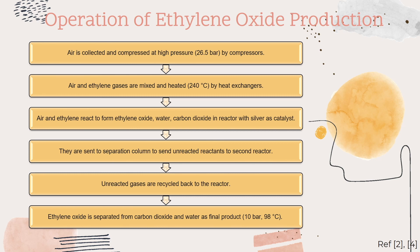Then, air and ethylene react to form ethylene oxide, water, and carbon dioxide in the reactor with silver as catalyst. The products are then sent to a separation column to recycle the unreacted reactants to a second reactor, and the unreacted gases are recycled back to the reactor.